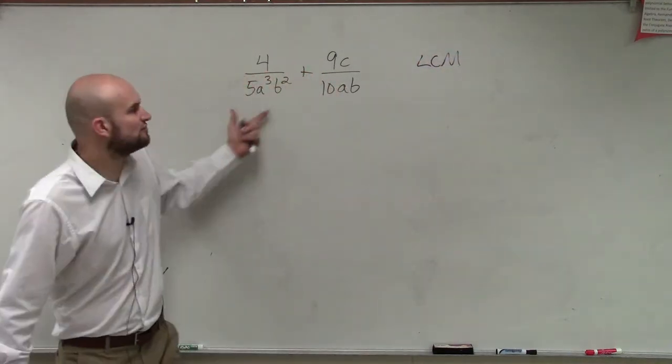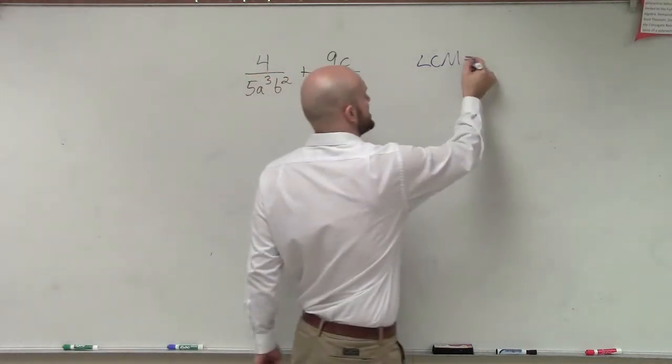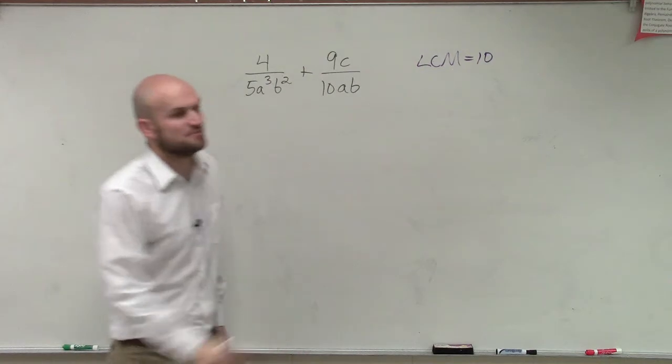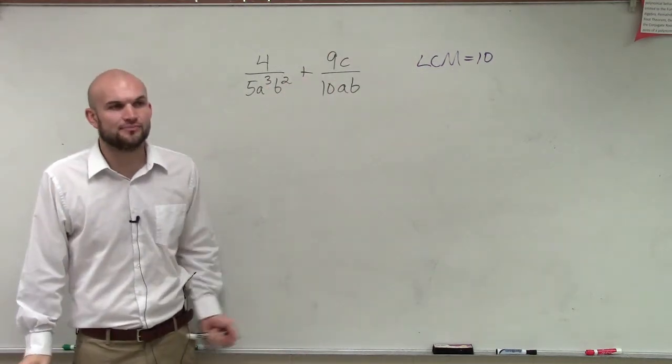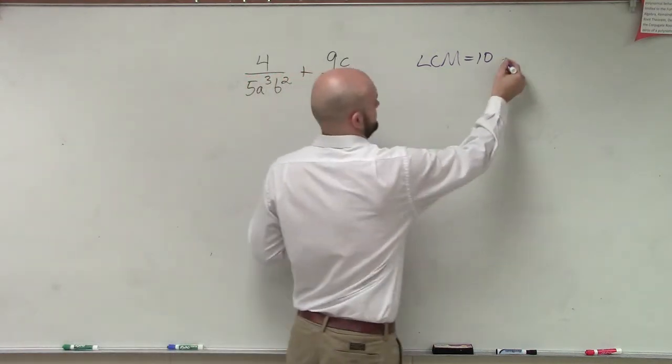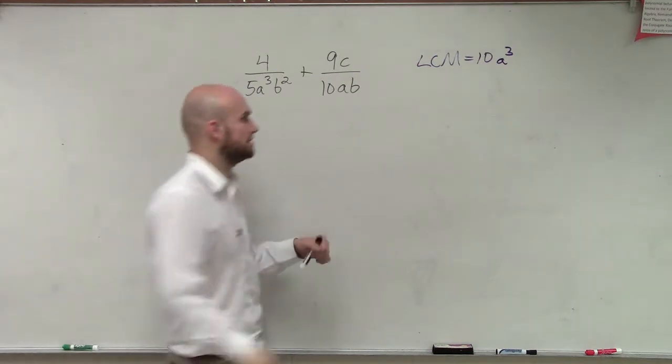So, what is the smallest number that both 5 and 10 divide into? 10. 10, right? So, LCM is 10. What is the smallest number that A cubed and A both divide into? A cubed. A cubed, right? And what about B squared and B? B squared. B squared. There we go.